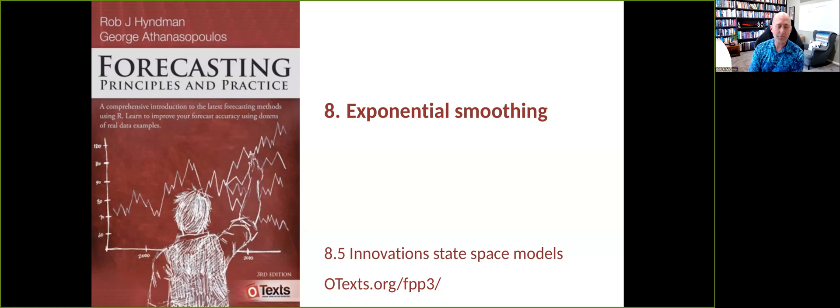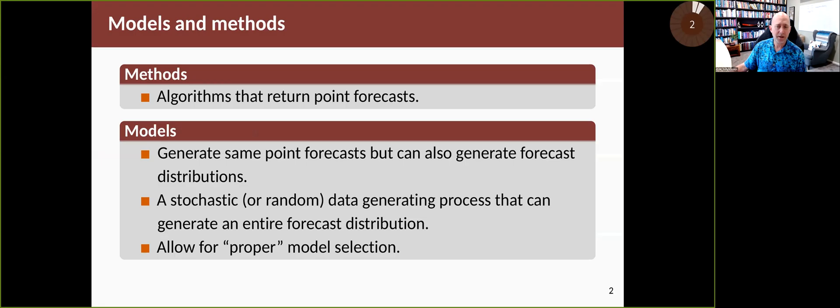That's when innovation state-based models were developed, initially beginning with Ralph Snyder at Monash University, and then over the 10 years from 1997 through to about 2007, all the theory was developed to help provide the tools that we now use for exponential smoothing modeling.